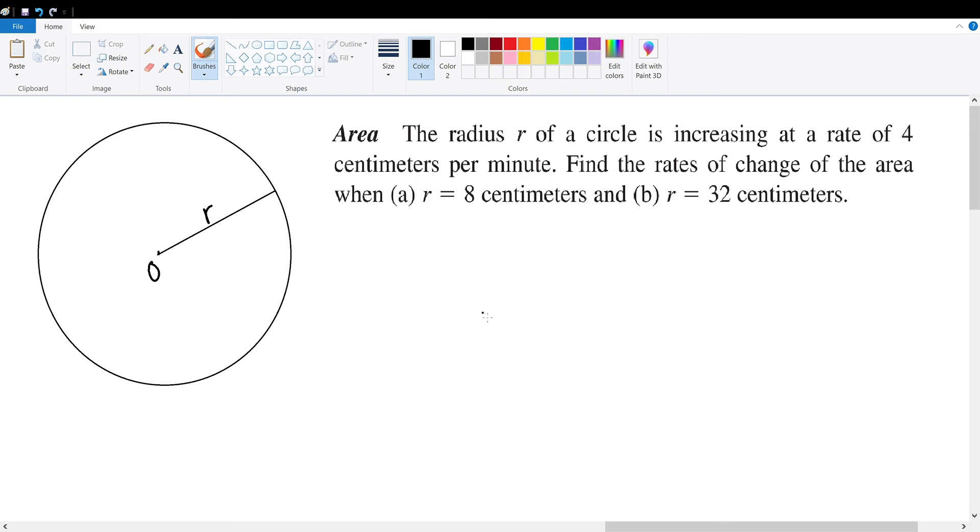And with this, we're told how the circle's radius is increasing. So the circle's radius, dr over dt, is equal to 4 centimeters per minute.